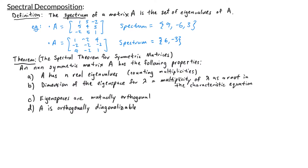Eigenspaces are mutually orthogonal, and A is orthogonally diagonalizable. Some of these properties we've seen already — for example, part C is something we've proved in a previous video, and parts B and D follow from the theorem in our last video.